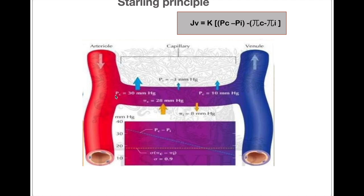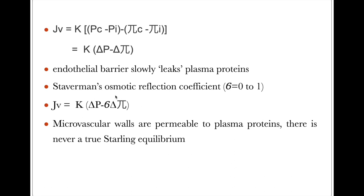Later, Starling recognized that the interstitial fluid has a substantial amount of plasma protein concentration. The microvascular semipermeability concept is imperfect, and he also recognized that the endothelial barrier slowly leaks plasma proteins into the interstitium, which was quantified using Staverman's osmotic reflection coefficient, sigma. Sigma varies from 0 to 1, where 1 means 100% — that is, no leakage of solute to the interstitium. The Starling equation was then modified using sigma.